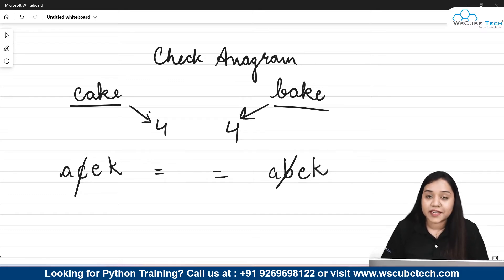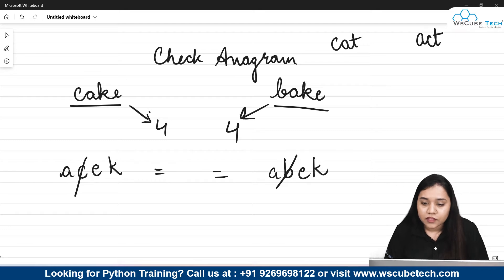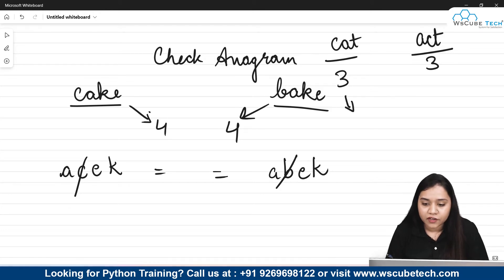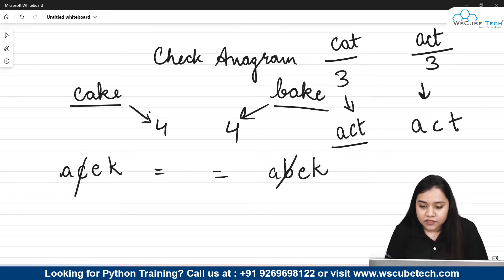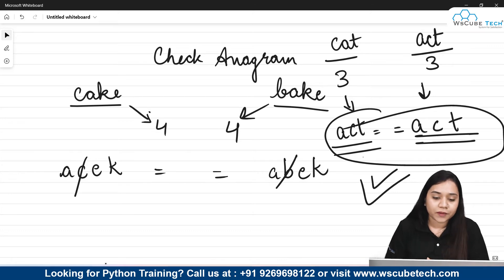So once you arrange them in ascending order, if they match each other, then those two strings are anagram. For example, if I have the words 'cat' and 'act', the length of both is equal — three letters each. If I arrange them in ascending order, the sorted form of 'cat' is A, C, T, and the ascending order of 'act' is also A, C, T. So they are equal to each other, meaning these two strings are anagram. This is what we need to implement in Python.